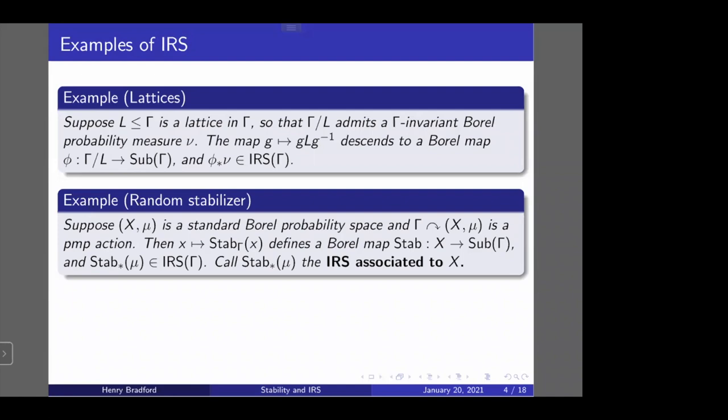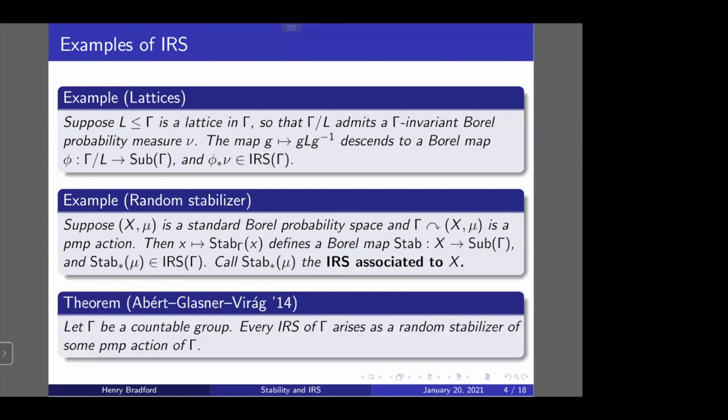The random stabilizer is not only a powerful source of examples of IRS's — it's an entirely generic example, in the sense that every IRS arises this way. This is the theorem of Abért, Glasner, and Virág, who proved that every IRS of a countable group can be obtained as the random stabilizer of some probability measure-preserving action of gamma. That's a quick whistle-stop tour through some facts about IRS's. Any questions so far?